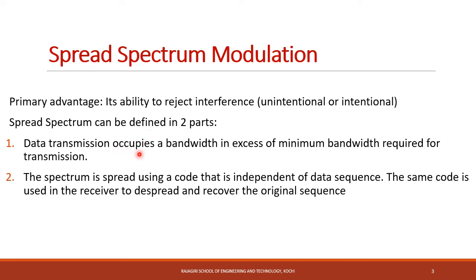It is a means of transmission in which the data sequence occupies a bandwidth which is much more than the minimum bandwidth required for transmission. The spectrum is spread before transmission by the use of a code which is known as a spreading code. This spreading code is independent of the data sequence. At the receiver side, the same code must be used in order to de-spread and recover the original sequence.